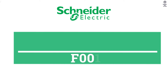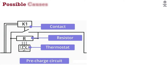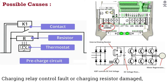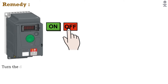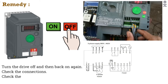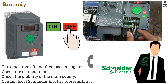F001 Pre-Charge. Possible Causes: Charging Relay Control Fault or Charging Resistor Damaged. Remedy: Turn the drive off and then back on again. Check the connections. Check the stability of the main supply. Contact local Schneider Electric Representative.